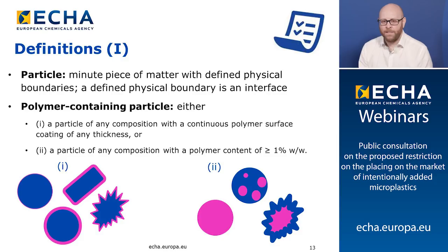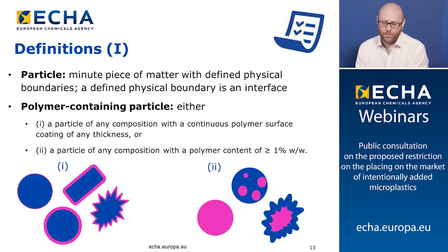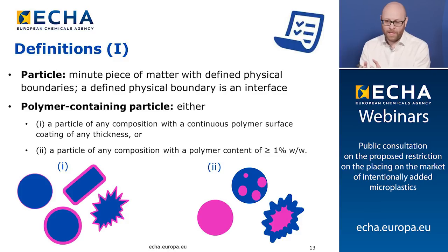The other way to be considered a polymer-containing particle is a particle of any composition with a polymer content of greater than 1%. This covers particles completely composed of a polymer, but also mixtures of polymers and other substances within a particle, where the polymer content exceeds 1% on a weight basis. Any morphology is relevant; we recognize that polymers are frequently used for encapsulation, and these would be covered by this definition.